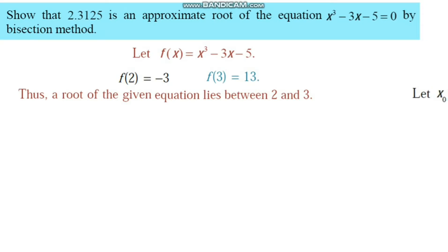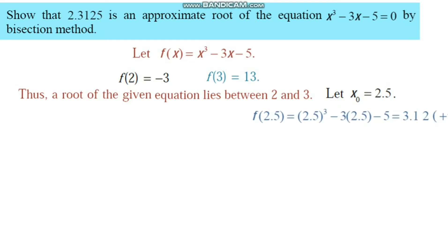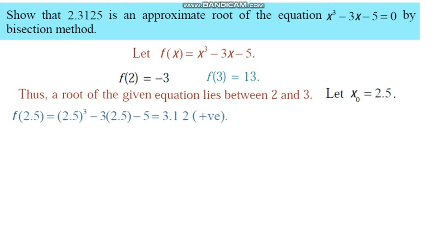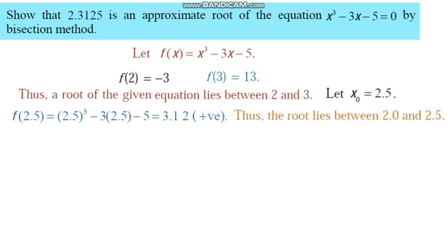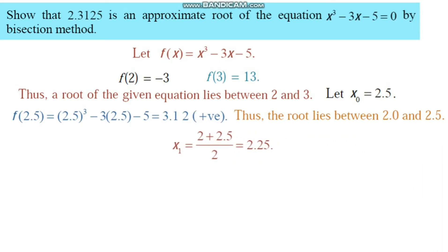The initial approximation is the midpoint of 2 and 3: (2+3)/2 = 2.5. We compute f(2.5) ≈ 3.12, which is positive. Since f(2) is negative and f(2.5) is positive, the root lies between 2 and 2.5. The next approximation is the average of 2 and 2.5, giving 2.25. We compute f(2.25), which is negative.